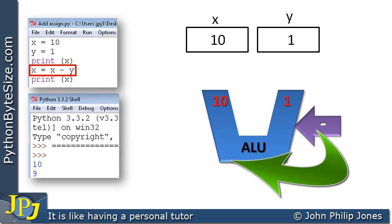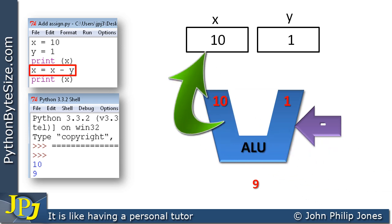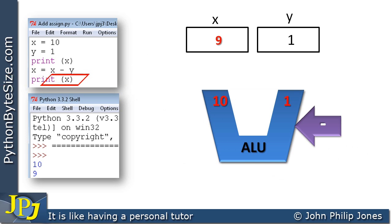The output from the arithmetic and logic unit will obviously be 9. This 9, which is the result of the subtraction, will be assigned to the variable X. We then go on to the statement print X, and we can see that X is now printed to the visual display unit.